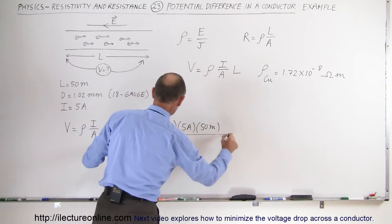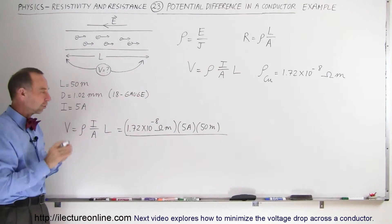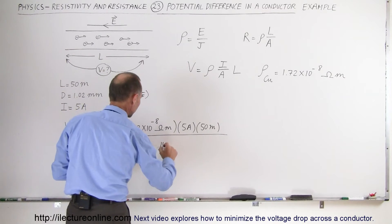And the cross-sectional area, of course the cross-sectional area of a conductor is typically a circle and so it would be pi times the radius squared.